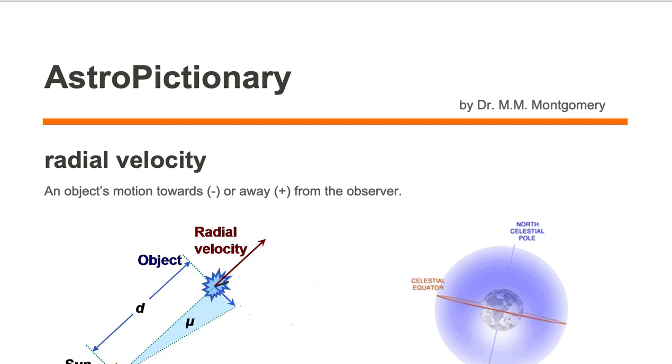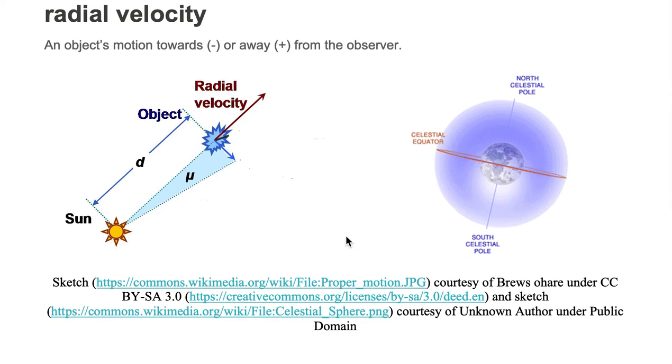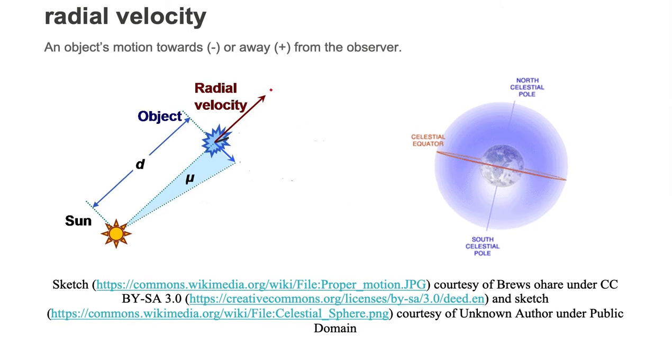Radial velocity is an object's motion towards or away from the observer. Generally, away from the observer is given as the positive direction.